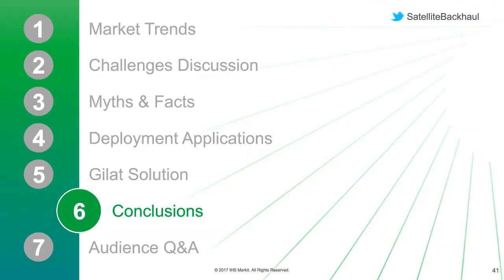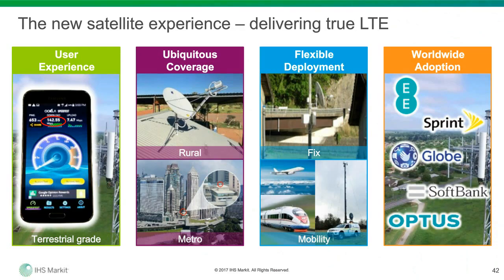Hopefully we've given you some food for thought regarding satellite as a viable solution for LTE backhaul and a number of other applications. To summarize: we've seen satellite used in a range of mobile network scenarios from rural to Metro Edge to dense urban deployments, and in different application scenarios — small, medium, and large macro cell sites. Satellite fits a range of applications. We've seen fixed, nomadic, and on-the-move services — very flexible in terms of deployment. Satellite delivers ample capacity, terrestrial-grade user experience, and comparable economics to other backhaul technologies. And satellite is now adopted worldwide by Tier 1 operators as well as more specialist operators.